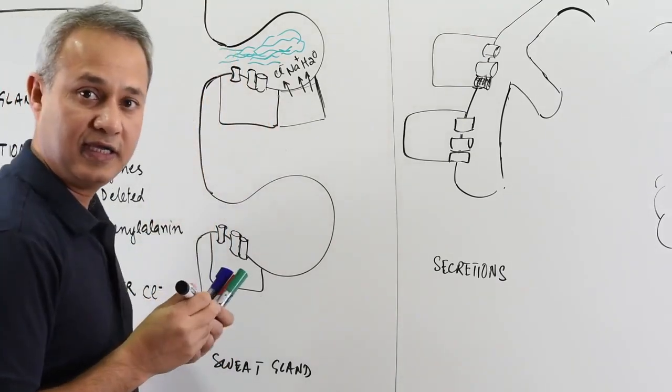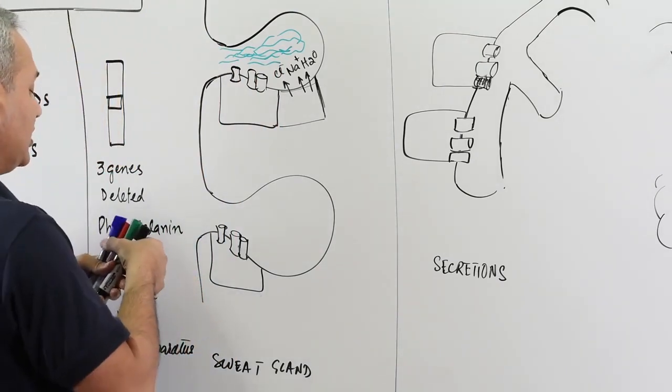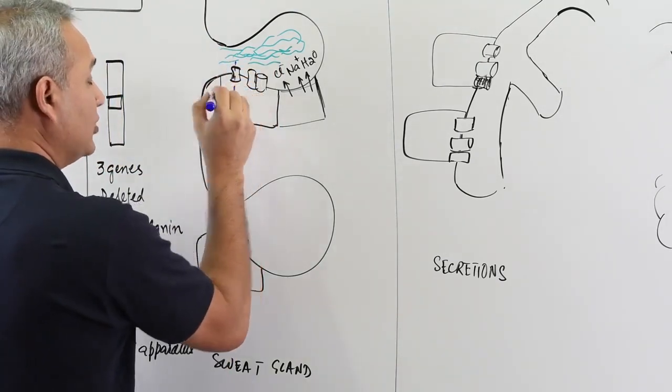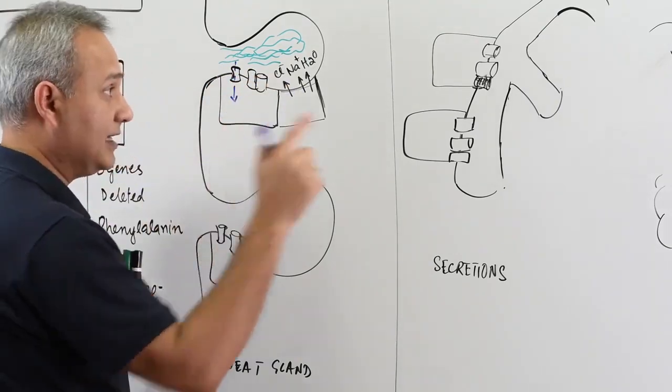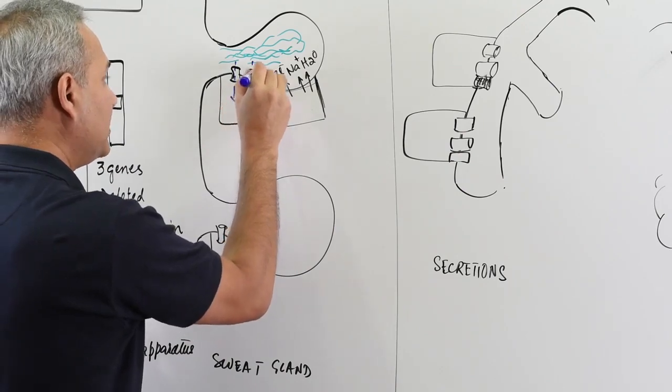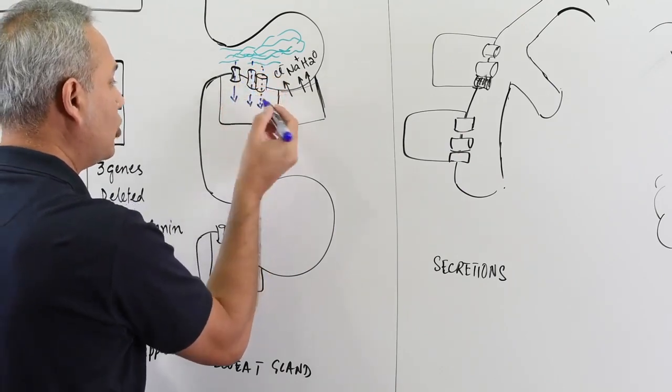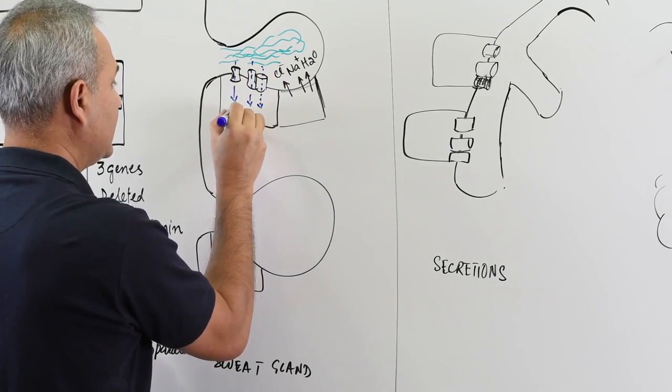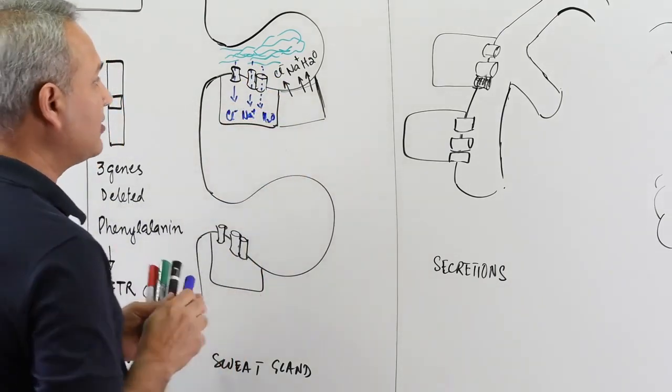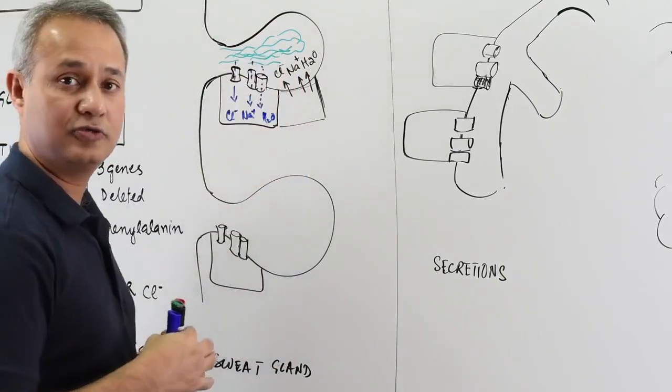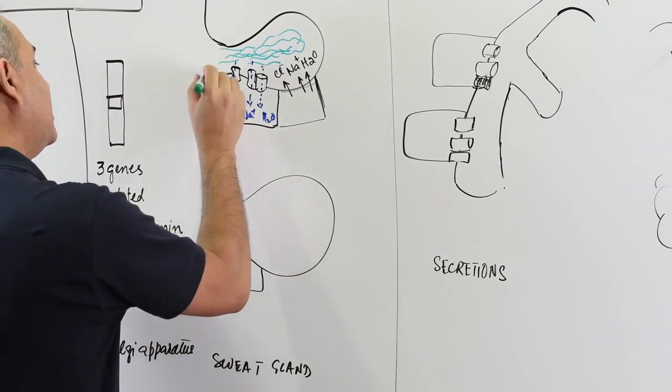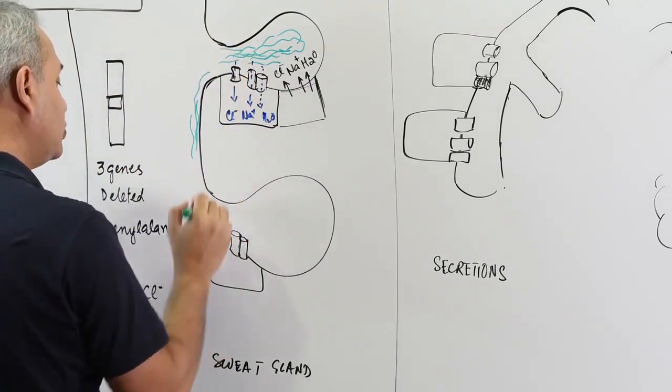Before this fluid can go to the skin, what happens is that we reabsorb the chloride. We reabsorb sodium and we reabsorb some water. So chloride and sodium are actively reabsorbed, some water is reabsorbed as well. The result of that is that a sort of hypotonic solution is formed, and that solution then finally comes out on the surface, and that is the sweat.